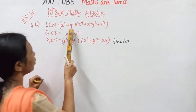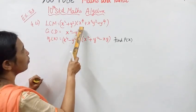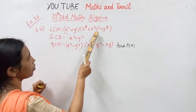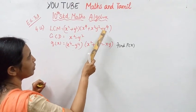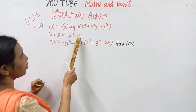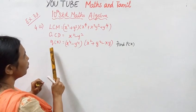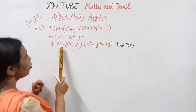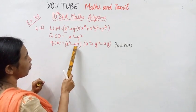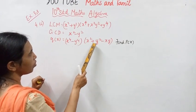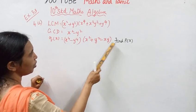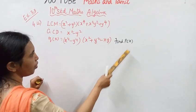LCM: we have x squared plus y squared, and x to the power 4 plus x squared y squared plus y to the power 4. GCD: we have x squared minus y squared. Q of x is x to the power 4 minus y to the power 4, and x squared plus y squared minus xy. Find P of x.